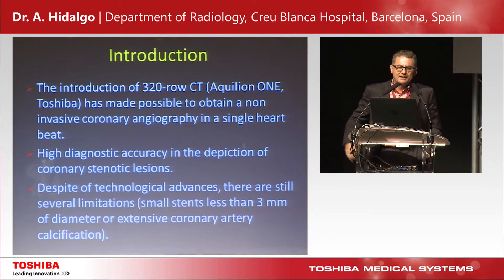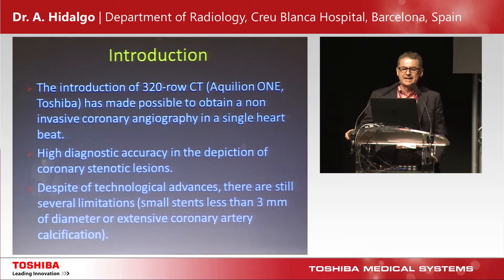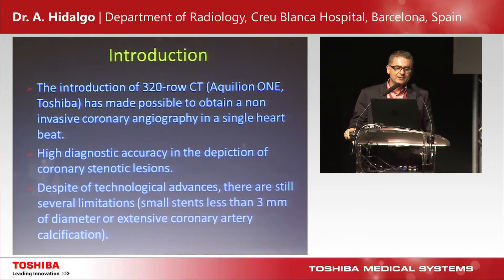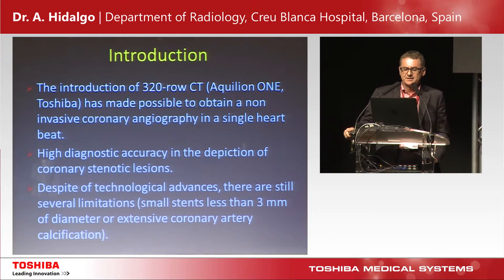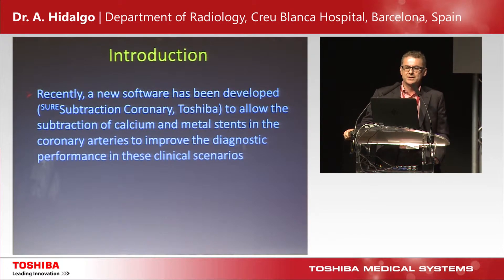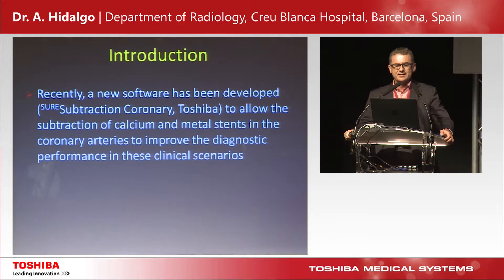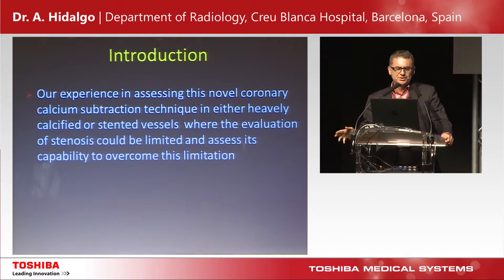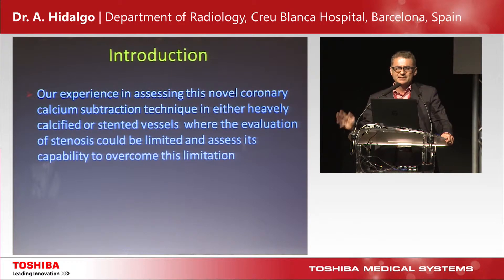The introduction of the Aquilion ONE 320-row CT scanner has made it possible to acquire, in a single heartbeat, a map of the whole coronary artery, implying high diagnostic accuracy. However, there are some limitations with small stents or with a large amount of coronary artery calcification. Recently, a new software has been developed to allow subtraction of calcium and metallic stents to improve diagnostic accuracy in these scenarios. The goal of this lecture is to show our experience assessing this new subtraction technique in vessels that are heavily calcified or contain stents.